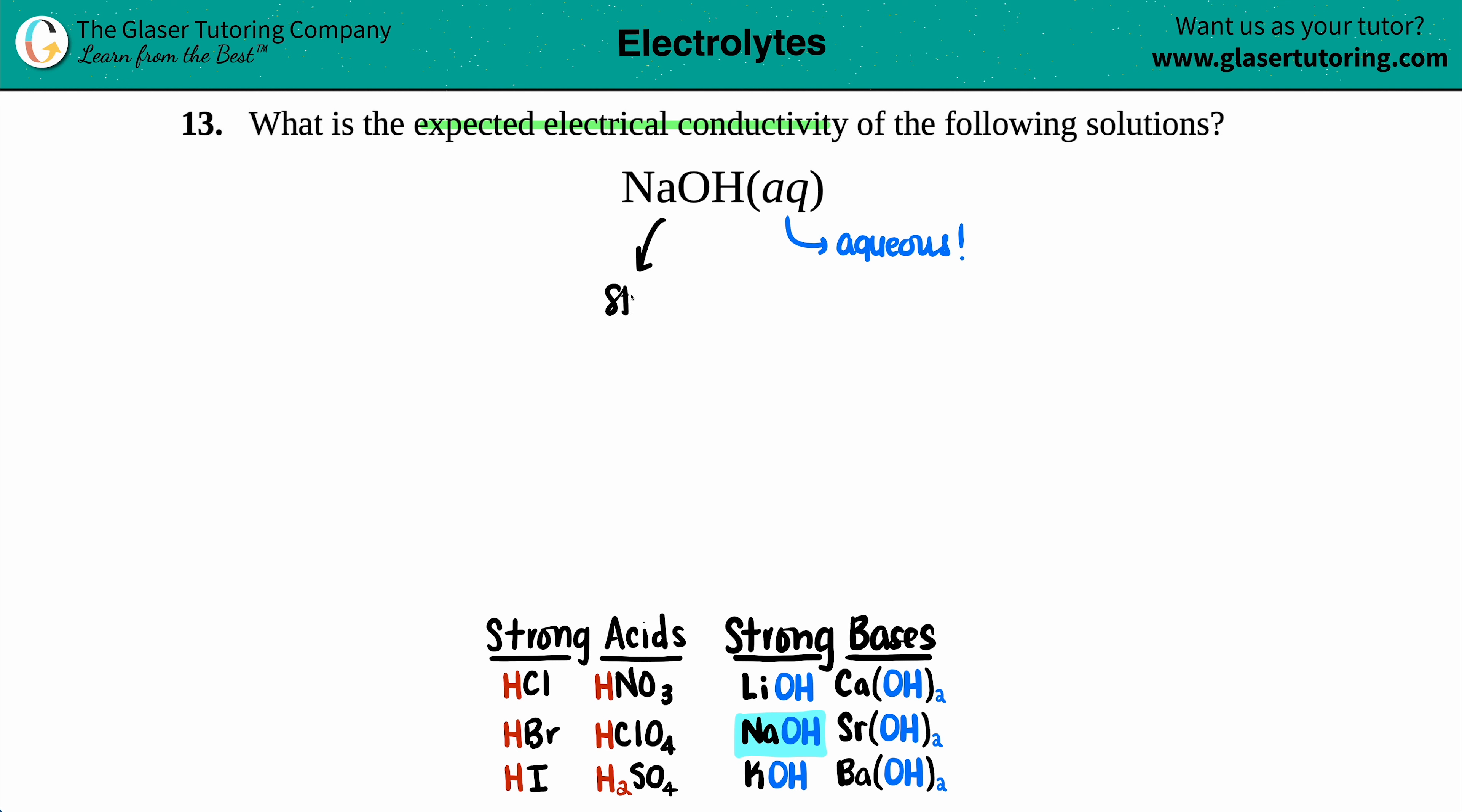And because it's a strong base, it's going to be able to dissolve completely in water, making ions. If something is electrically conductive or can conduct electricity, you have to have ions in your solution. You have to have positives and negatives. So when I say that it's a strong base, it's a strong conductor.